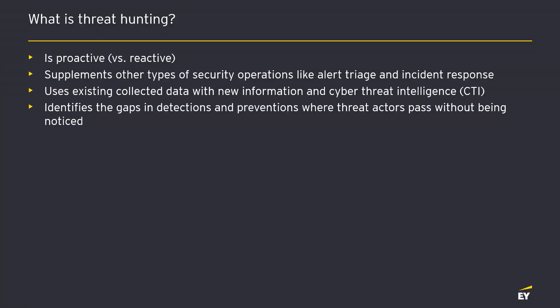Threat hunting is based on existing collected data and new information — that intersection is the main focus area. You find out about new things from an intel provider or something you recently discovered. We didn't know about this threat before, so we don't think we have monitoring or alerting. We take that new intelligence, and then we have all this collected data — endpoint data, SIEM data, log data, network data — search it against the new intelligence, and try to find those pieces that match but didn't already have alerts or monitoring.